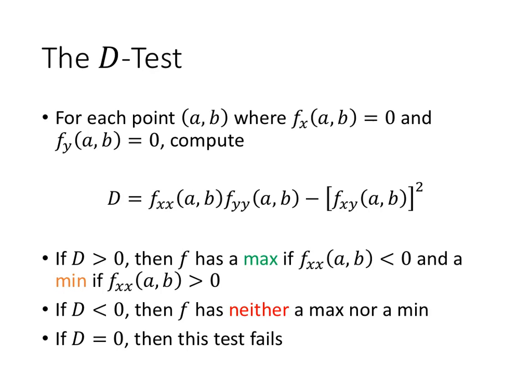If D is positive, then f has a max if f_xx is less than zero, and a min if f_xx is greater than zero. If D is negative, then f has neither a max nor a min. If D equals zero, then this test fails. Compare this to the second derivative test for one variable, and you'll see a lot of similarities.